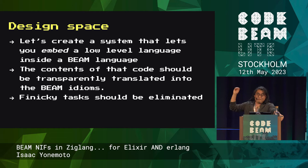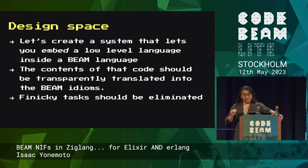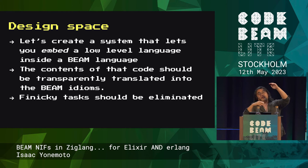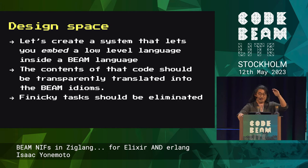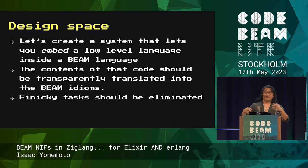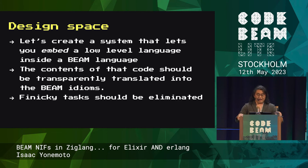I wanted to come up with a design space uniquely suited for this sort of coding. First, I wanted to embed the low-level language inside of Elixir so that for code review purposes, instead of just importing a C library that lives somewhere in some weird place, you can actually see it inline with your code. The contents of that code should be transparently translated into Beam idioms, with finicky tasks like unwrapping a Beam term to pull out an integer, or figuring out how many arguments your function was called with, completely gone.